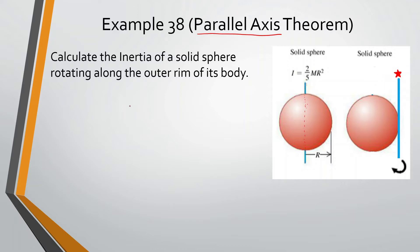So for the parallel axis, it says calculate the inertia of a solid sphere rotating along the outer rim of its body. So we're looking at something like this. How we want to do this is we know the parallel axis theorem is equal to the I, the inertia at the center of mass, plus md squared.